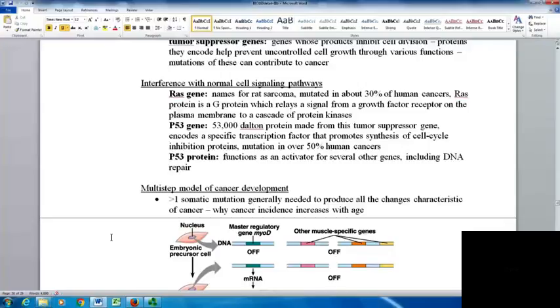The P53 gene produces a 53,000 Dalton protein from this tumor suppressor gene. It encodes a specific transcription factor that promotes synthesis of cell cycle inhibition proteins. These proteins are important because they shut down the cell cycle. Mutations in this gene are found in over 50% of human cancers. P53 protein functions as an activator for several genes including DNA repair, so if P53 goes wrong, it opens the door for many other genes to be out of control.